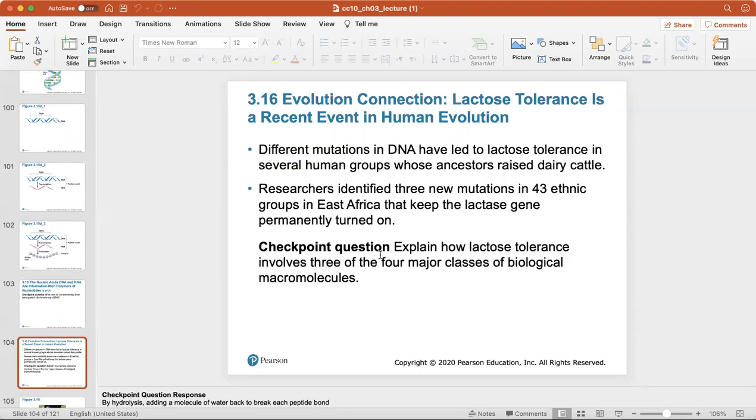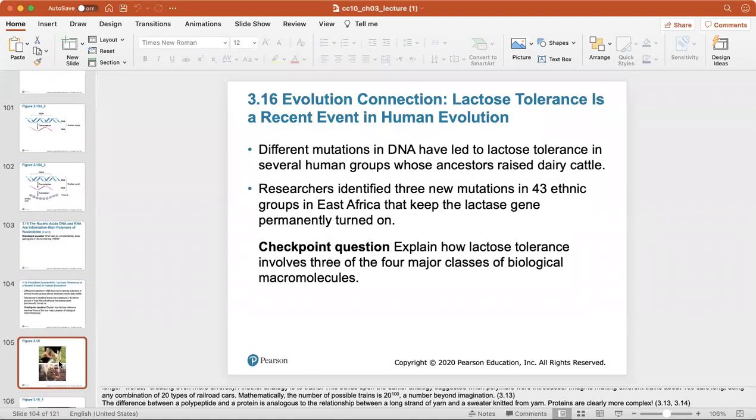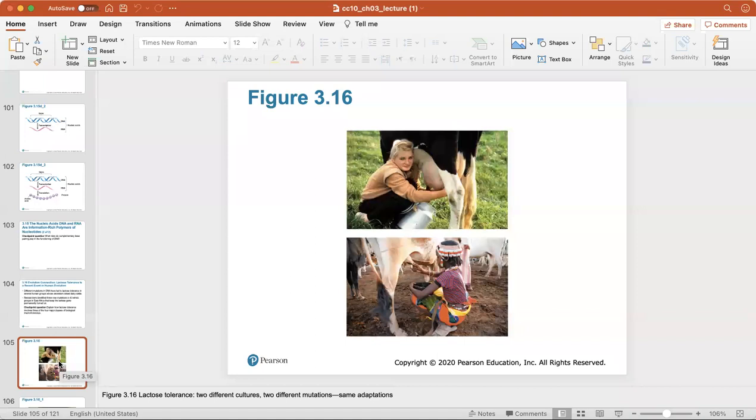Different mutations in DNA have led to lactose tolerance in several human groups whose ancestors raised dairy cattle. Researchers identified three new mutations in 43 ethnic groups in East Africa that keep the lactase gene permanently turned on. Here's a look at lactose tolerance in two different cultures, two different mutations, but the same adaptations.